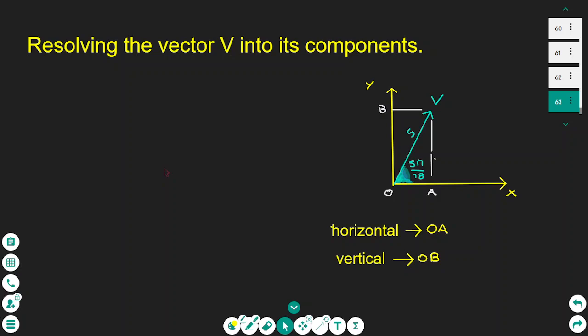Hello everyone, today I'm going to show how to resolve a vector into its components. I have a diagram to the right with a vector V with magnitude 5 and direction angle 5π/18.